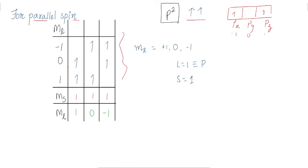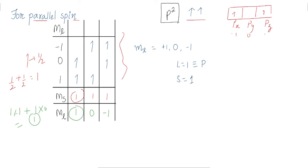When we have two electrons with parallel spin — both up-spin — in the ml=0 and ml=1 orbitals, we calculate ms. For one electron the spin is half, so for two electrons: half plus half equals one, so ms=1. For ml, we apply the same procedure: 1×1 plus 1×0 gives us ml=1.